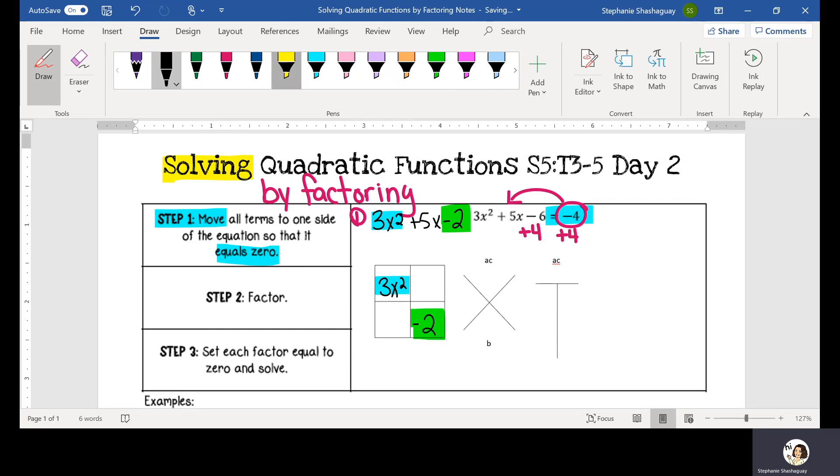And then I need to find the factors that will add together to give me this positive 5x, my B term. So that's going to go in the bottom of my x puzzle as a positive 5x. And my a times my C is going to be a negative 6x squared. So negative six. And I need to find the factors of negative six that are going to add together to give me a positive 5x.